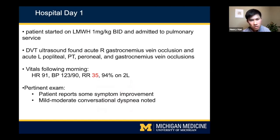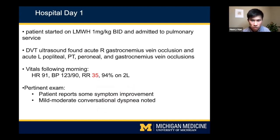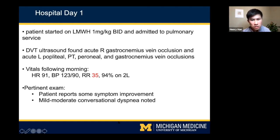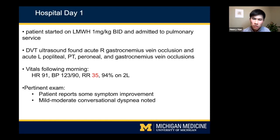Vitals the following morning showed improvement in tachycardia, now in the 90s from the 100s-110s. Blood pressure remained stable, though his respiratory rate slowly uptrended over the course of hospitalization from 26 initially to 35, while his degree of hypoxia remained stable on two liters at 94%. His exam the following morning showed some subjective improvement, although we noted mild to moderate conversational dyspnea — after five to seven words, he was getting a bit short of breath.